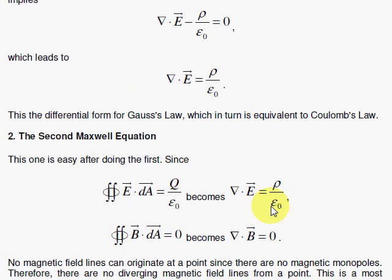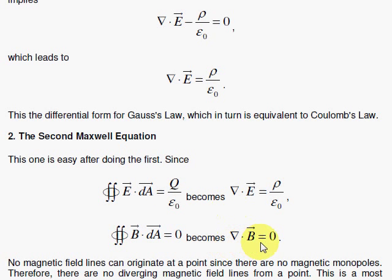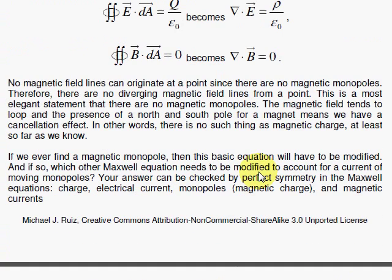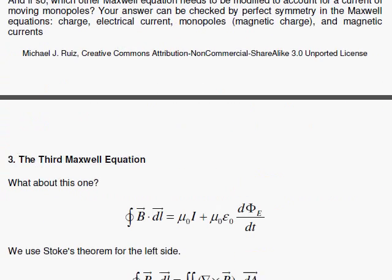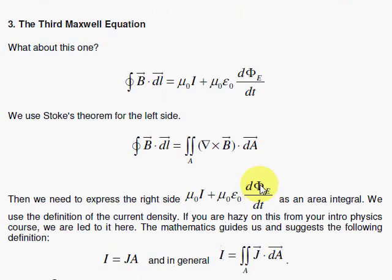The second one is easy because we have just done one that's similar to it. Here we have a zero instead of Q, so we get del·B equals zero.